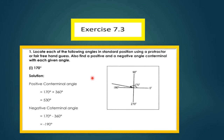Exercise 7.3, Question 1: Locate each of the following angles in standard position using a protractor or pair; also find a positive and a negative angle co-terminal with each given angle. First part: 170°. The positive co-terminal angle is 170° + 360° = 530°. The negative co-terminal angle is 170° − 360° = −190°.